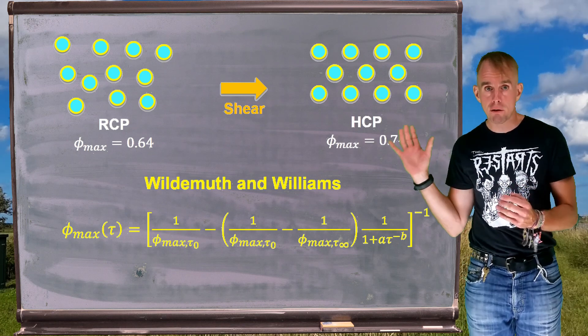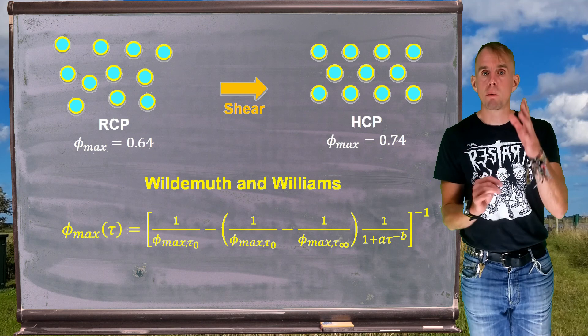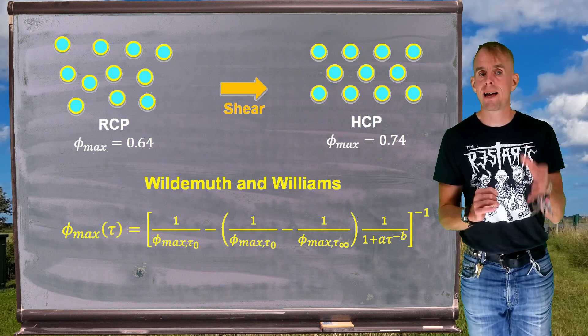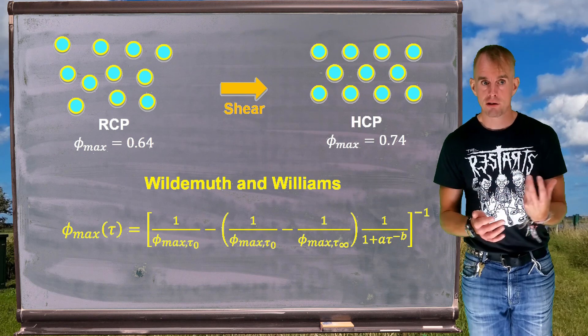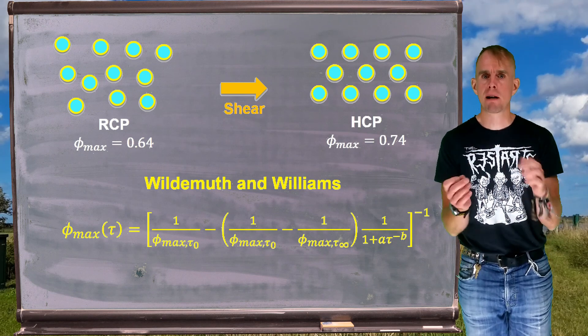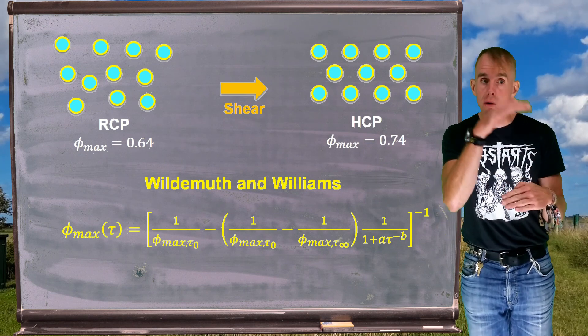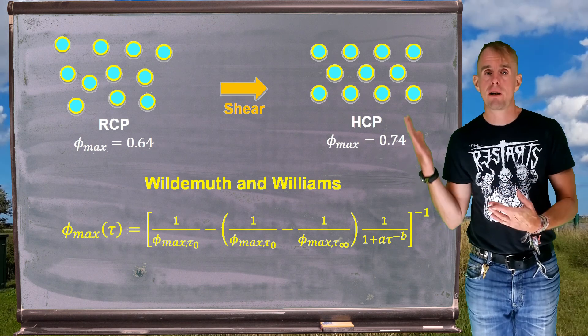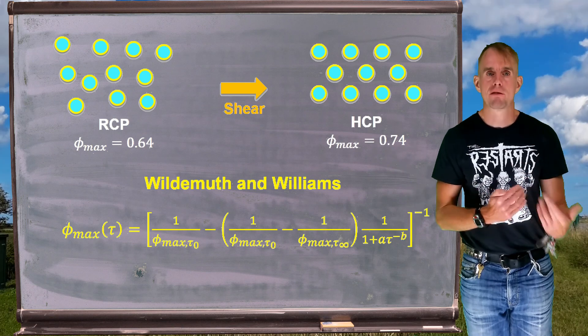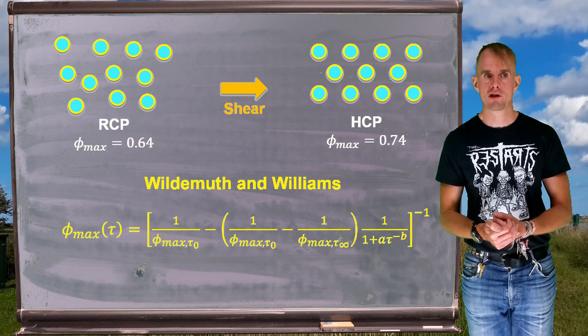And we can see that on the far right hand side of this expression, there's a 1 over 1 plus a τ to the minus b term. τ is a stress applied to the system. A and b are parameters that allow the tuning of the model to experimental data. So it gives us a way of calculating maximum packing fraction as a function of shear stress.